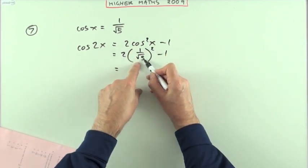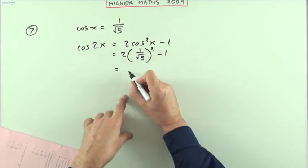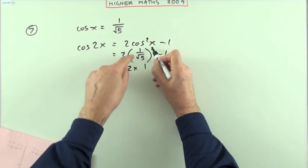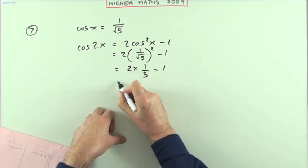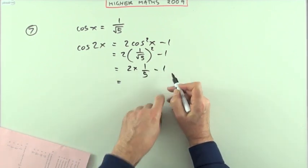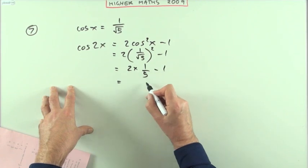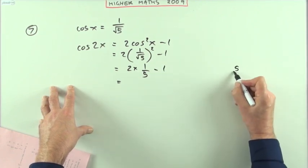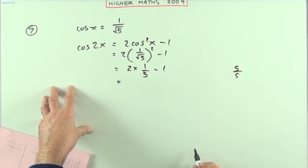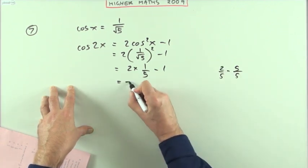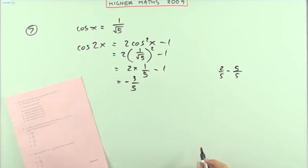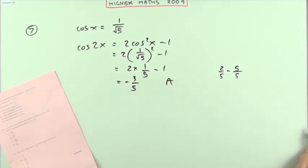Squaring a fraction, square the top, square the bottom. Squaring the numerator, you've got 2 times 1. Squaring the denominator, √5 times √5 gives you 5 back. So that means you've got 2/5 take away 1. You'll have to make both parts into fifths. So you've got 2/5 take away 5/5, which is -3/5. It's just a case of checking which one's -3/5. That would be A.